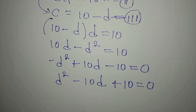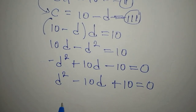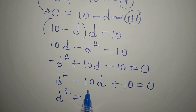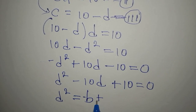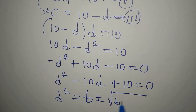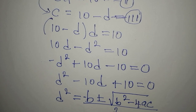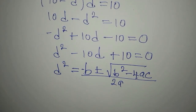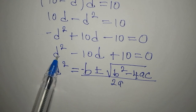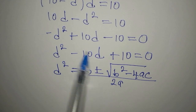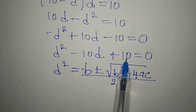We'll use the quadratic formula method to solve for d. The formula is: d equals negative b, plus or minus the square root of b squared minus 4ac, all over 2a. Here a is the coefficient of d squared which is 1, b is negative 10, and c is the constant 10.